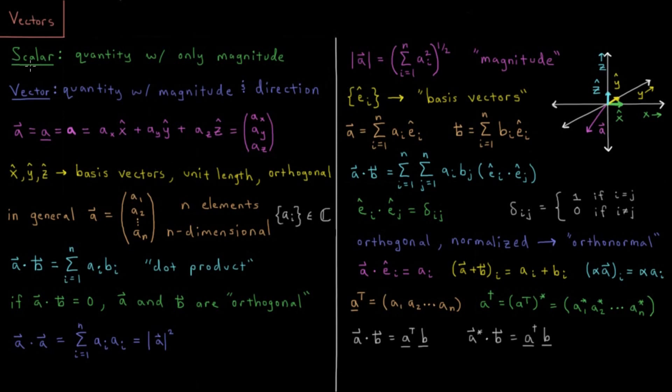We'll start out by defining a scalar quantity. That would be some mathematical quantity that only has a magnitude. So that would be things like real numbers, like e or pi or 1, 0, negative 1, things that only have a magnitude.